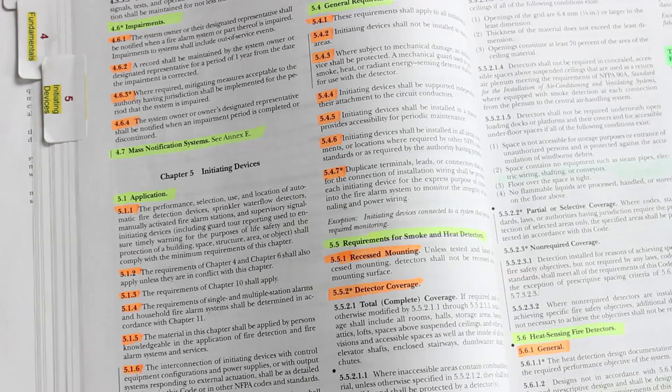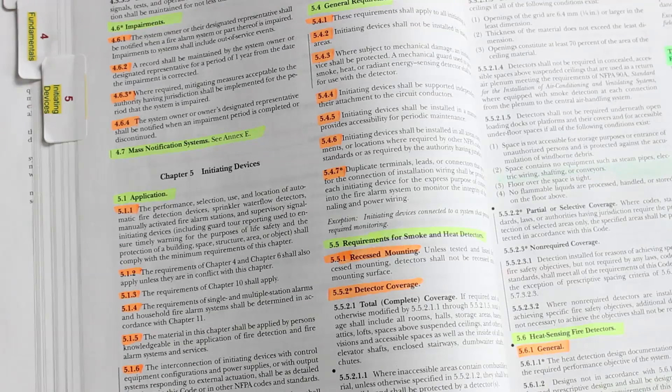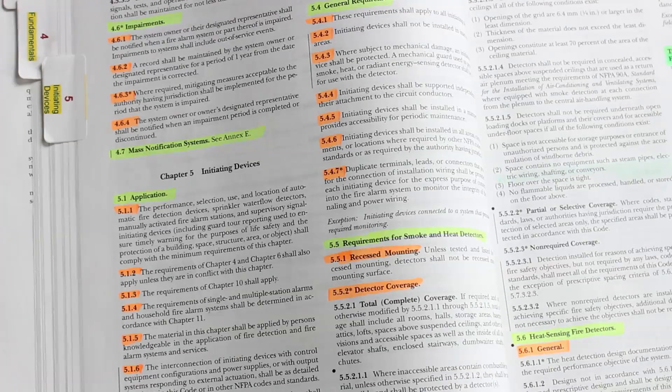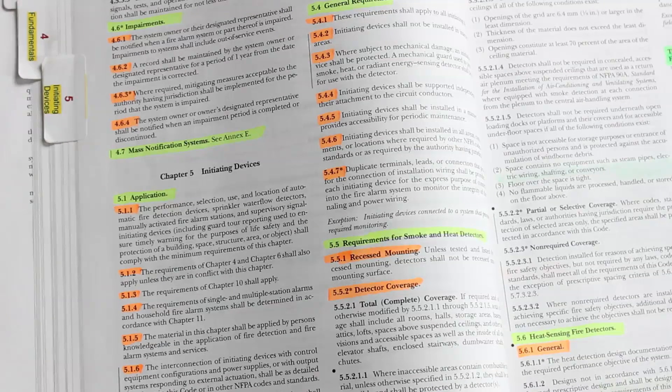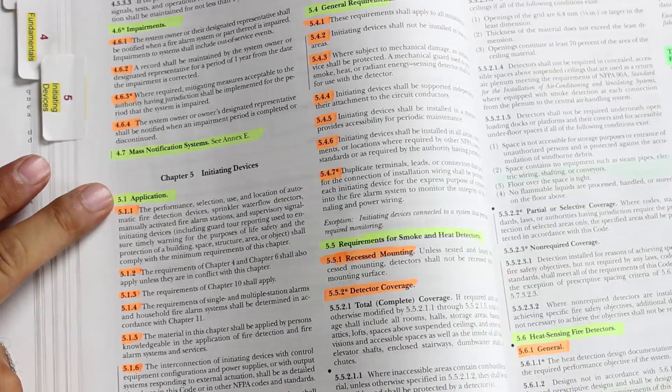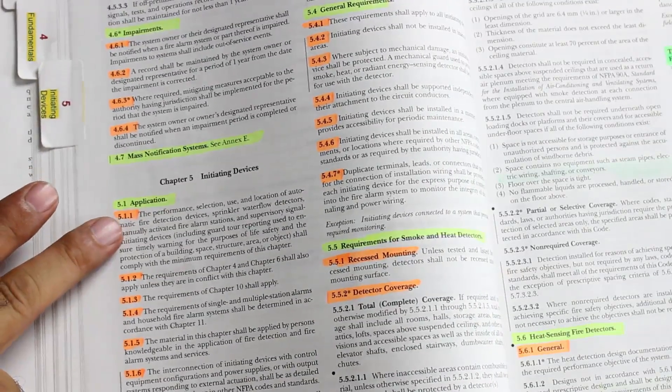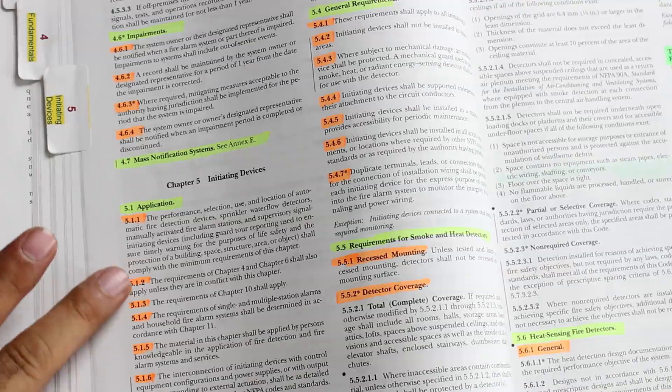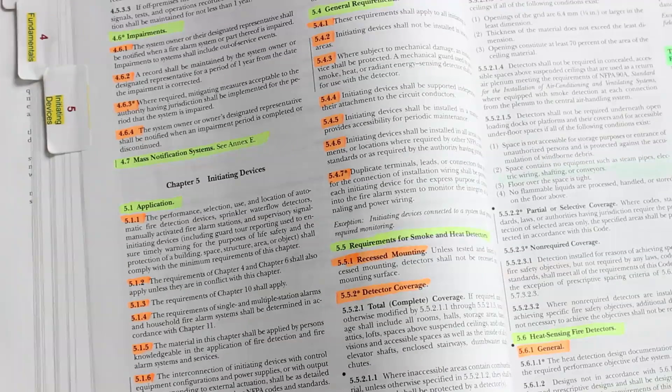Also, NICET policy is that you can highlight your book like I did over here. But please don't go crazy highlighting every single section, otherwise the whole book will be important. What I did is I highlighted the main sections of the chapter with yellow and highlighted the subsections with a different color. I don't have that much highlighting, just a few highlights.